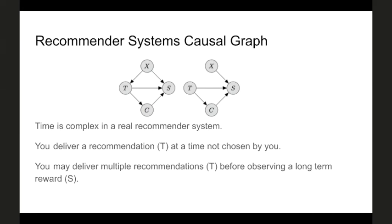The other thing that makes things much more complicated in a recommender system — and isn't easily represented in these graphs — is that time is quite complex. You're asked to deliver recommendations not at the time of your choosing. Sales also occur as point processes, which are relatively complex models that most machine learning does not cover. There's some interesting work by Randall Lewis who models sales with point processes, but this is fairly early work. There's the additional problem that you can deliver multiple recommendations before a sale occurs, so for long-term reward you've got additional temporal problems.